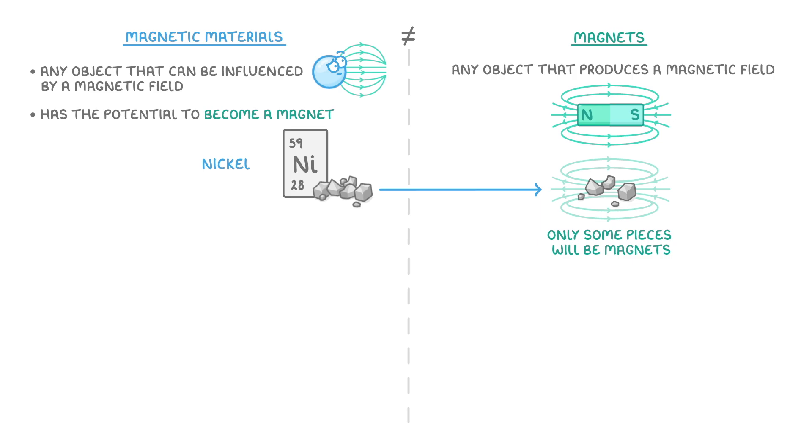The other common magnetic elements to know are cobalt and iron. And the alloys of these elements, like steel, also count as magnetic materials.